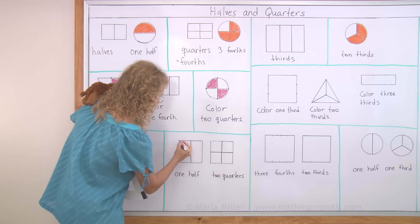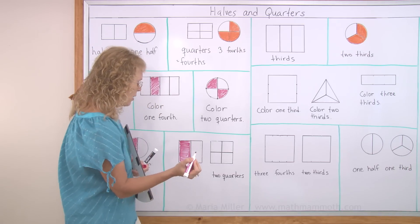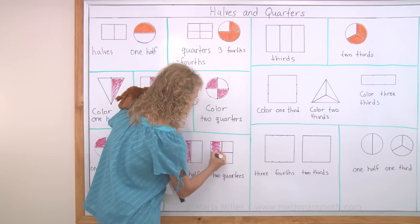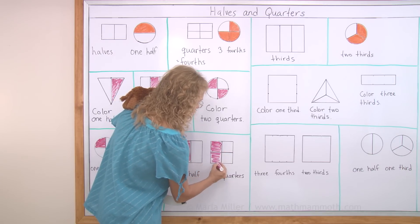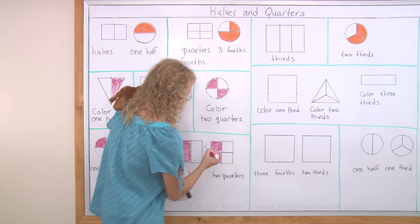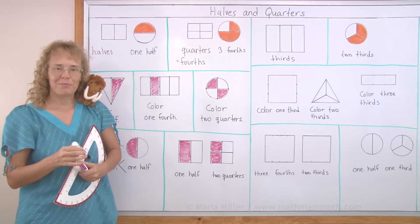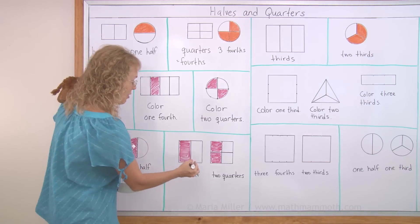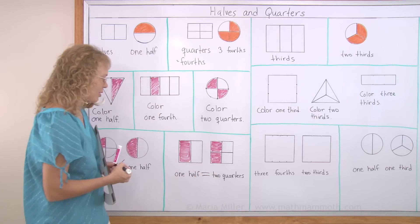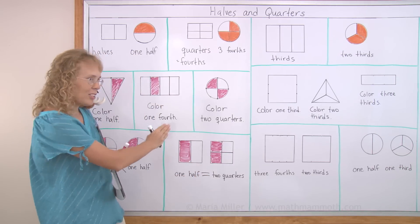Then color two quarters. Okay. I'm going to color this and this quarter. And now what do you think? Which one is more? Well, turns out they are equal, right? Don't they look like they are the same amount?